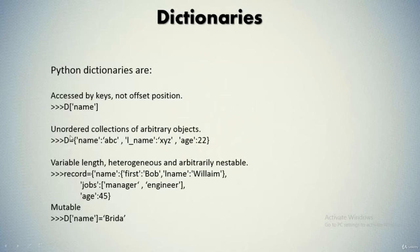For instance, we have a dictionary containing three keys: name, last name (signified by l_name), and age. If you want to access the element 'abc', you can specify the key associated with this element and it will give the outcome as its value.